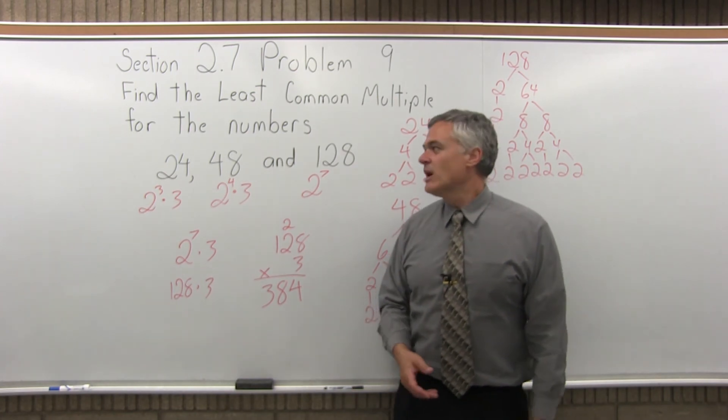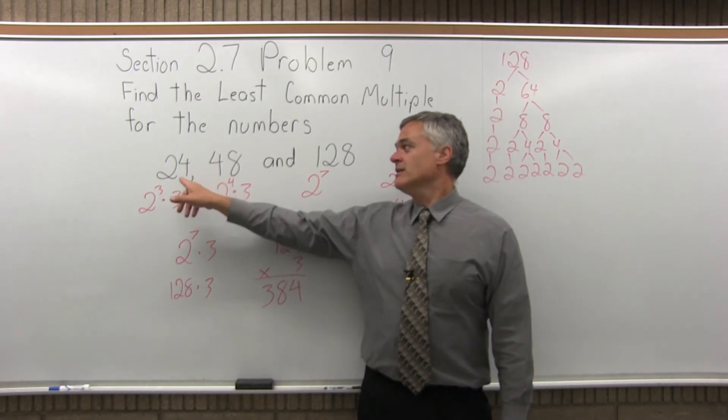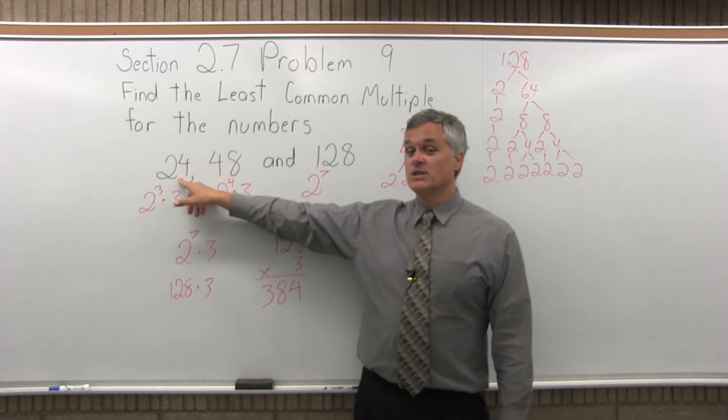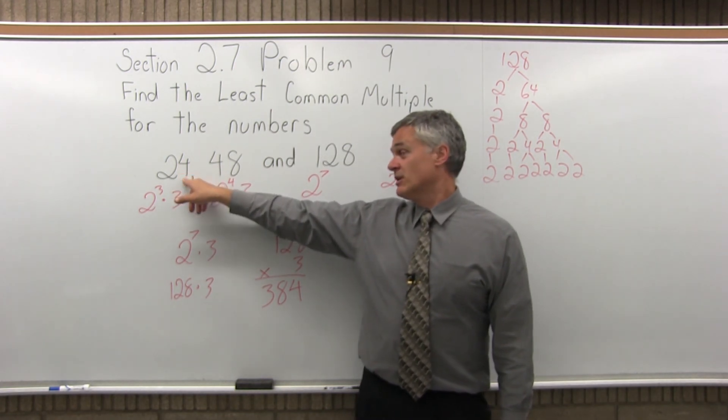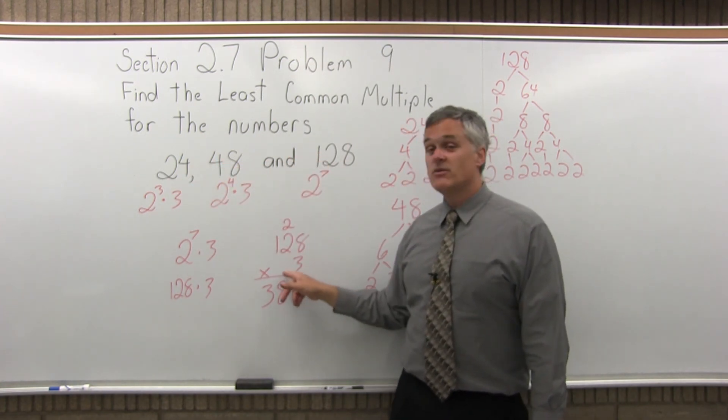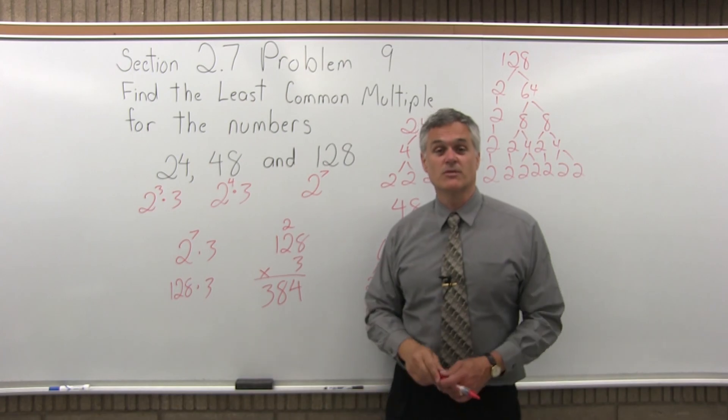Why? So what? Well, the reason is if you had a fraction problem with three fractions and you needed a common denominator and you had 24, 48, 128 as denominators, 384 would be your lowest common denominator for those fractions.